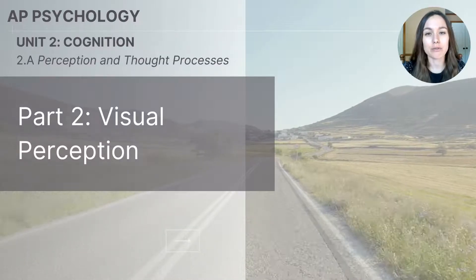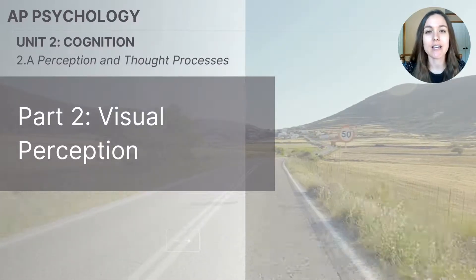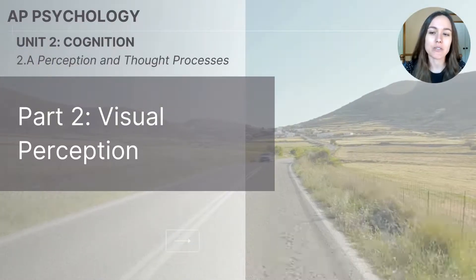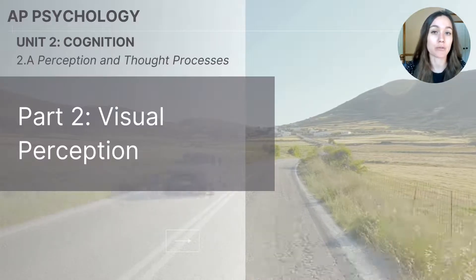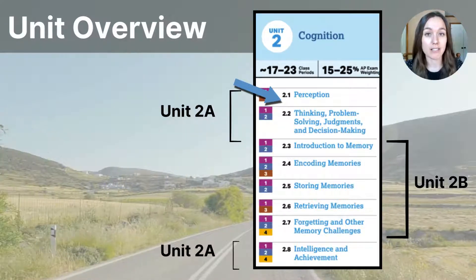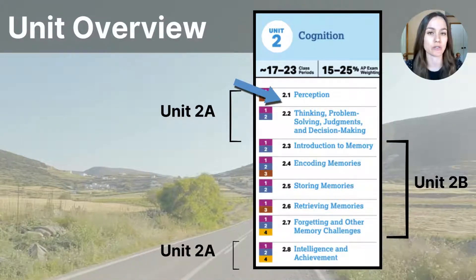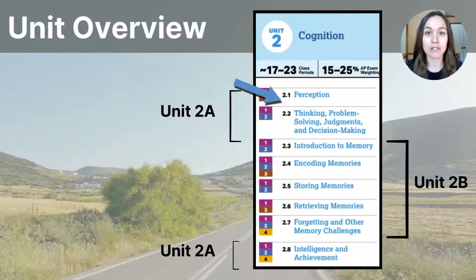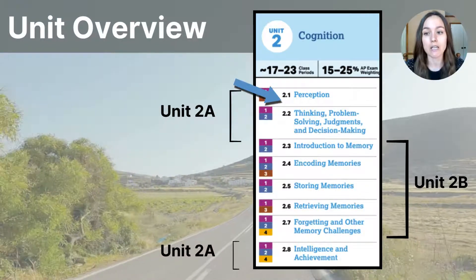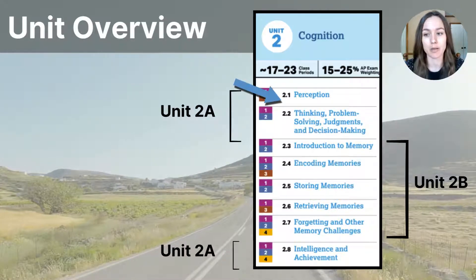Hi everyone, this video is part two of the 2A series on perception and thought processes in the Unit 2 Cognition series for AP Psychology students. This lesson focuses specifically on the way the brain perceives visual information. As you learned in the previous video, I have separated Unit 2 into two parts, and this particular lesson falls within the first section, which I'm calling 2A. As you can see on the Unit outline, we're still in the first topic titled perception.